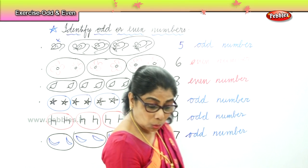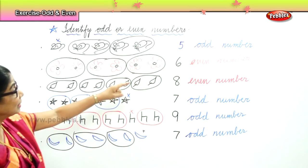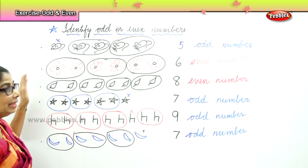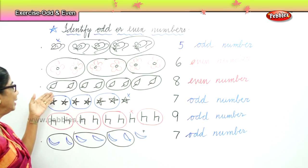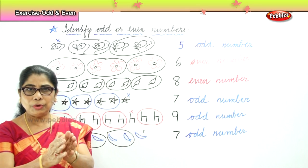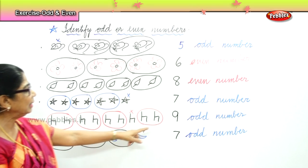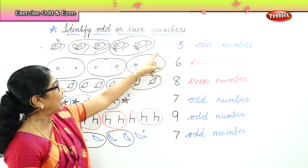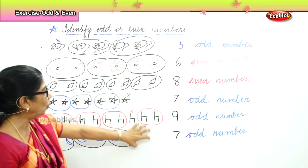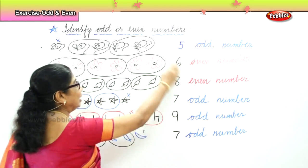Do you understand what is the meaning of odd number and even number? Look at six and eight — even numbers — because they don't have any flower or leaf left over; you are able to pair them all up. But for nine, seven, and five — there is an odd one out. So we say numbers seven, nine, and five are odd numbers.